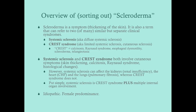Scleroderma can be limited to the fingers and toes, which would be called sclerodactyly. Scleroderma can also be proximal, affecting the face, neck, and torso. You don't have to have both — you could have one or the other. When scleroderma is referred to as a syndrome, it can refer to any of multiple different kinds of syndromes, so scleroderma itself is not descriptive enough to explain what type of syndrome the patient has.